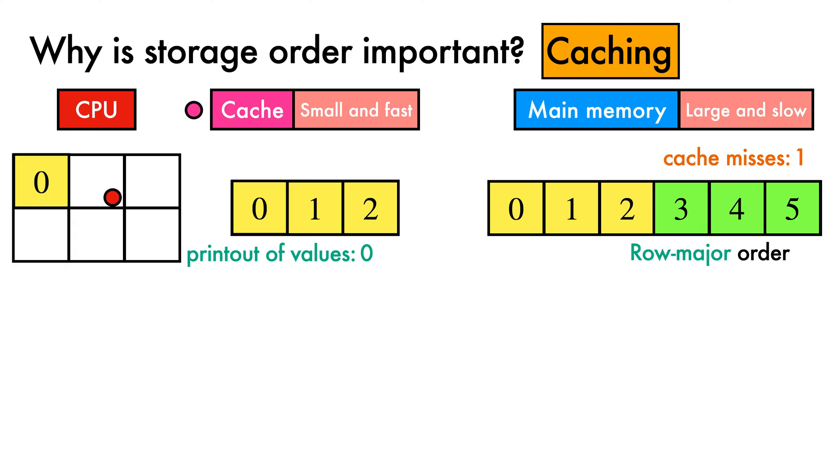The CPU now moves its attention to the next position and checks if its value is present in the cache. It is, so the data is quickly returned, loaded by the CPU, and printed. For the next position, another check at the cache yields a hit, so again the element is loaded quickly back into the CPU and printed.